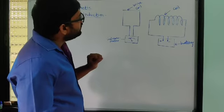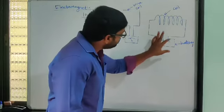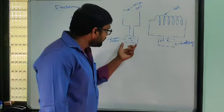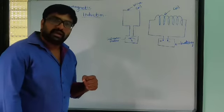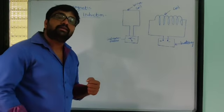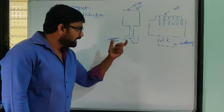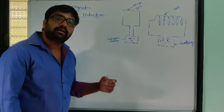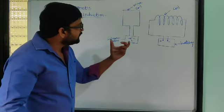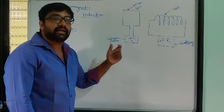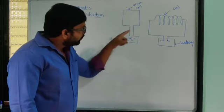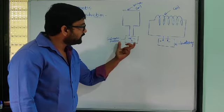Initially the switch is off, so electric current is not passing through the first coil. A galvanometer is a device used to measure electric current and identify whether current is passing through a circuit. It is highly sensitive — it can detect very small currents in the milliampere range. We connect the galvanometer to the second coil to check whether current is passing through it.